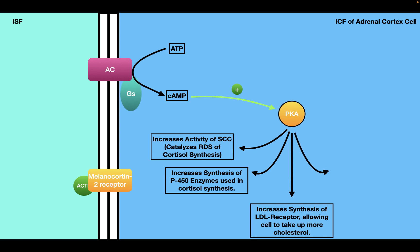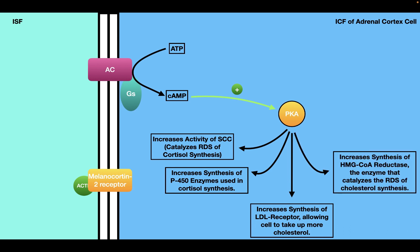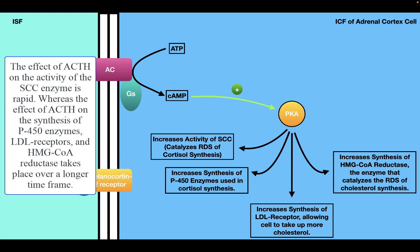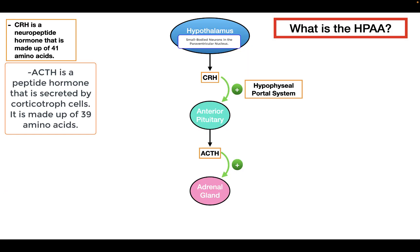In addition, protein kinase A increases the synthesis of HMG coenzyme A reductase — the enzyme catalyzing the rate-determining step of cholesterol synthesis — allowing the cell to accumulate more cholesterol and produce more cortisol. So the overall effect is that ACTH allows cells in the adrenal cortex to produce more cortisol. ACTH, a peptide hormone, stimulates the adrenal gland to synthesize and release cortisol.